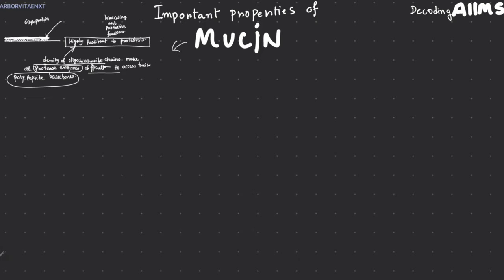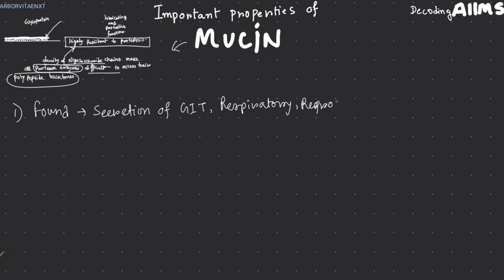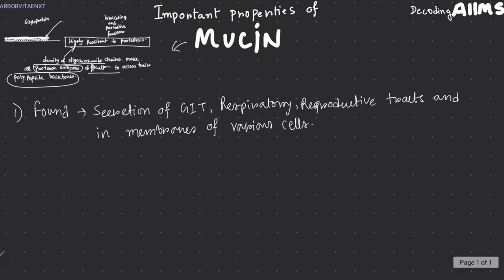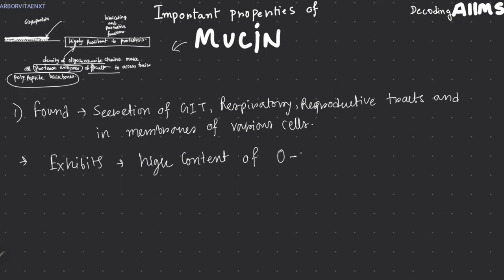Mucin is found in secretions of the GIT, respiratory tract, and reproductive tract, and in membranes of various cells. It exhibits a high content of O-glycan chains, which usually contain N-acetyl groups.